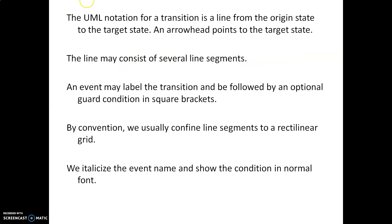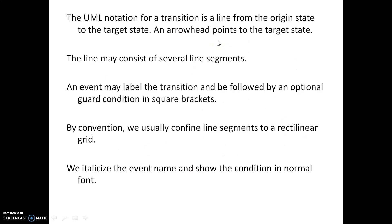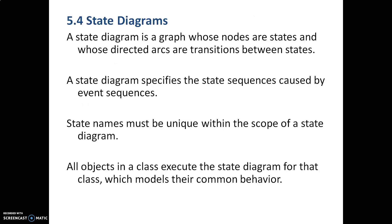The transition line may consist of several line segments. An event may label the transition and be followed by an optional guard condition shown in square brackets. For example, on a transition line the event is 'timeout' and the guard condition checks whether cars are present in those particular lanes. By convention, we usually keep line segments to a rectilinear grid — straight line segments — rather than curves. We use the event name and show the condition in normal font.